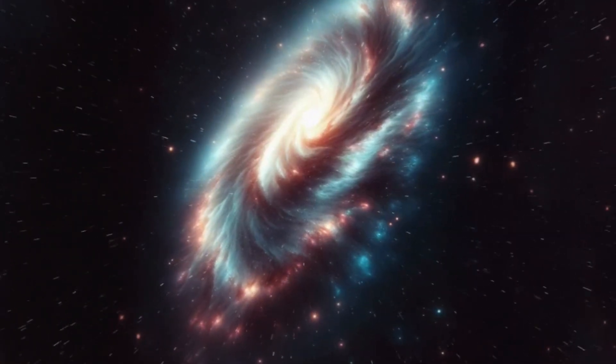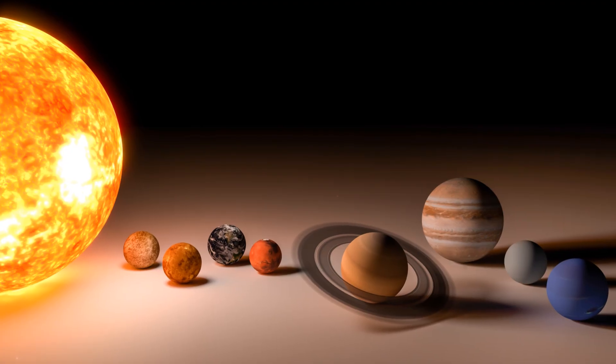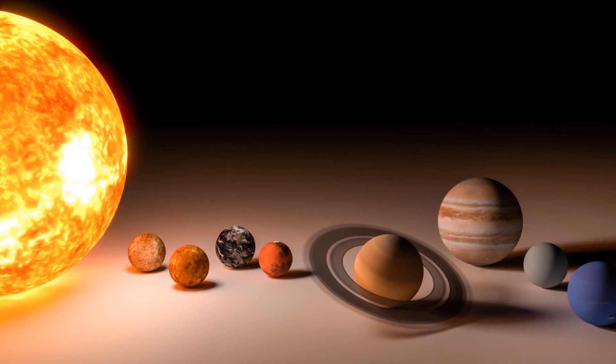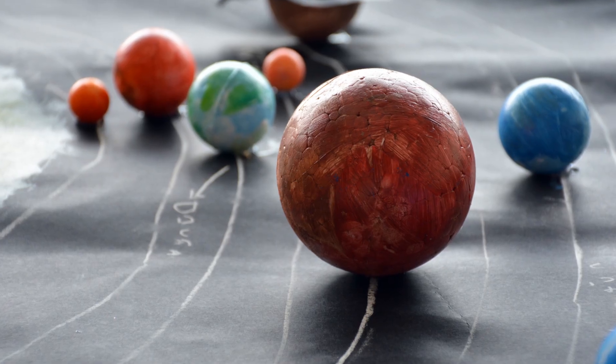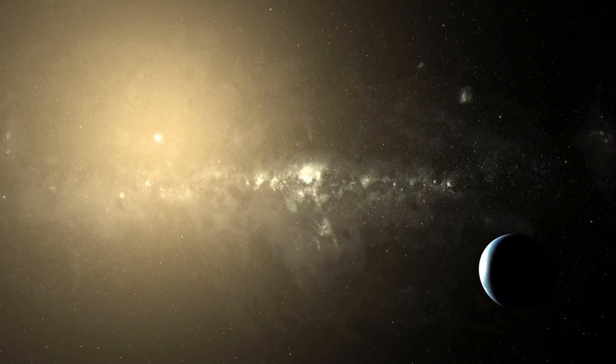If Planet Y is real, it changes everything. It means our solar system still has secrets after four and a half billion years. It means planetary formation isn't finished, and the Kuiper Belt is the frontier, not the end.